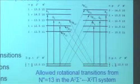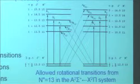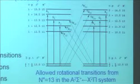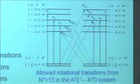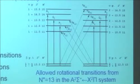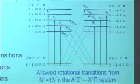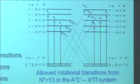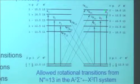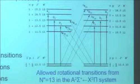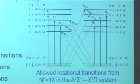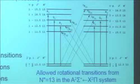Why is there no lambda doubling? Because it's a sigma state — lambda is zero. So I've drawn up here the ten candidate energy levels that could communicate with the ground state levels.